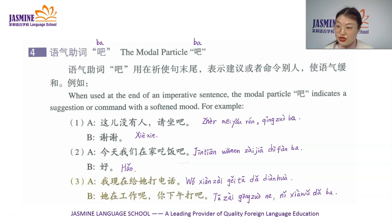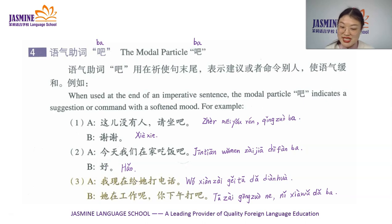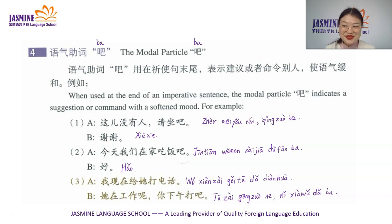When we want to give a suggestion to someone, we need to say 吧 at the end of the sentence. This is important — it's very polite, and you express your requirements in a softened mood. Let's read the three dialogues again: 这儿没有人，请坐吧。谢谢。今天我们在家吃饭吧。好。我现在给他打电话。他在工作呢。你下午打吧。好。 Don't forget your 吧 when you give somebody a suggestion or command.